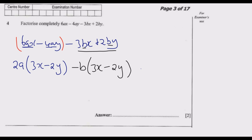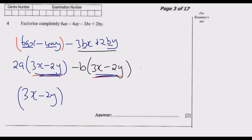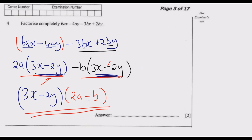You'll notice both grouped terms give (3X minus 2Y) — if they're different, you've made a mistake. Now we factor out the common bracket (3X minus 2Y). The remaining factors are 2a from the first group and minus B from the second, giving the final answer: (3X minus 2Y)(2a minus B). You cannot simplify further, and this gets you the two marks.